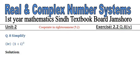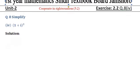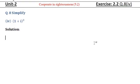Bismillahirrahmanirrahim, Assalamu Alaikum to all of you. Now exercise 2.2, question number 8, part number 4. In part number 4, you can see that (1 + iota) whole cube. So how we can simplify it? We can simplify it by using a formula.